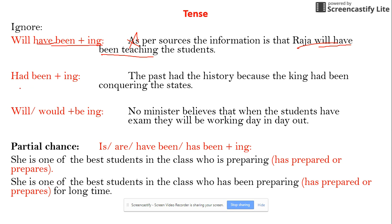The second ignored tense is 'had been ing' — the past perfect continuous. The name doesn't matter; wherever you see 'had been ing,' eliminate it. For example: 'The king had been conquering these traits' — eliminate. The third tense GMAT does not accept is 'will be ing' or 'would be ing.' For example: 'No minister believes that when the students have an exam, they will be working' or 'they would be working' — eliminate 'will be ing.'